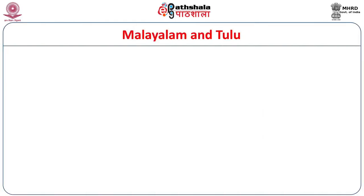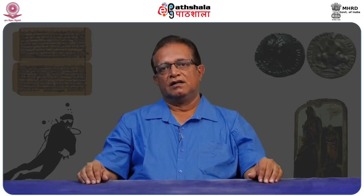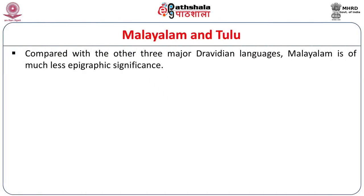Now we are going to another important language — Malayalam and Tulu. Though comparatively compared to Telugu, Tamil, and Kannada, this language appeared slightly later, almost in the medieval period. Earlier, in all the Malayalam-speaking area and Kerala, Sanskrit was very popular and many inscriptions written in those areas are in Tamil characters. Compared with the other three major Dravidian languages, Malayalam is of much less epigraphic significance.